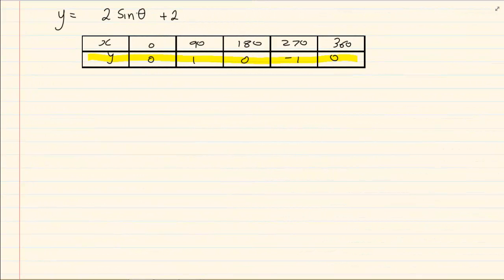If we take y is equal to 2 sin theta plus 2. Now you have your original table. What do you do? Remember at all times BODMAS is important. Because here you have the option of multiplying by 2 and adding by 2. What you are going to do is you are going to first multiply. And then you are going to add.